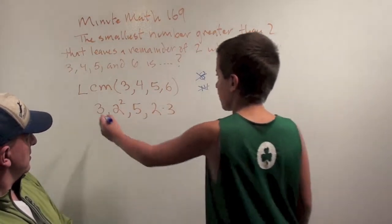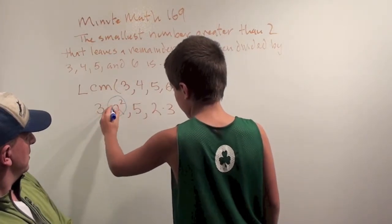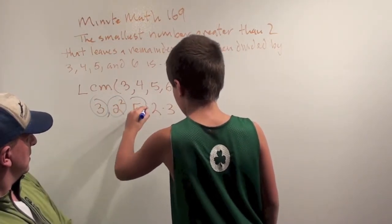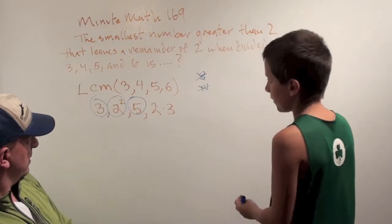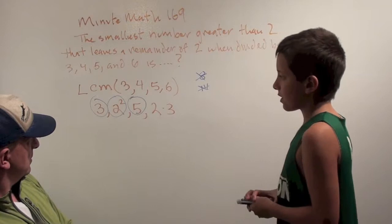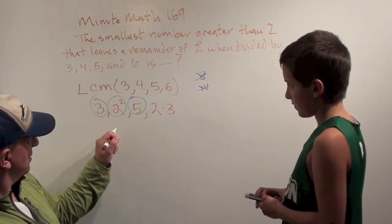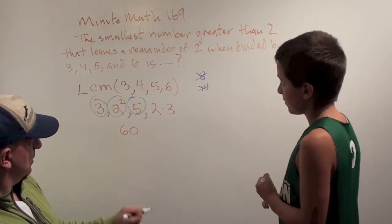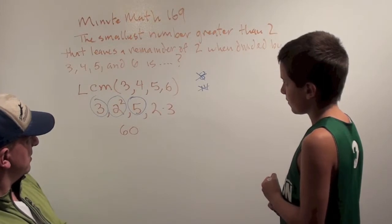Okay, so we need a 2 squared, a 3, and a 5. Okay. Which is... it's 60. Okay, so that's 60. That's the least common multiple.